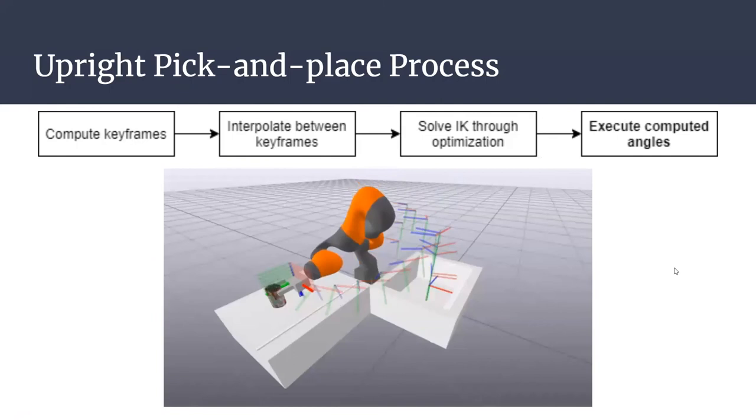Finally, the robot executes these joint angles in order, successfully placing the can on the table, as shown in this video.